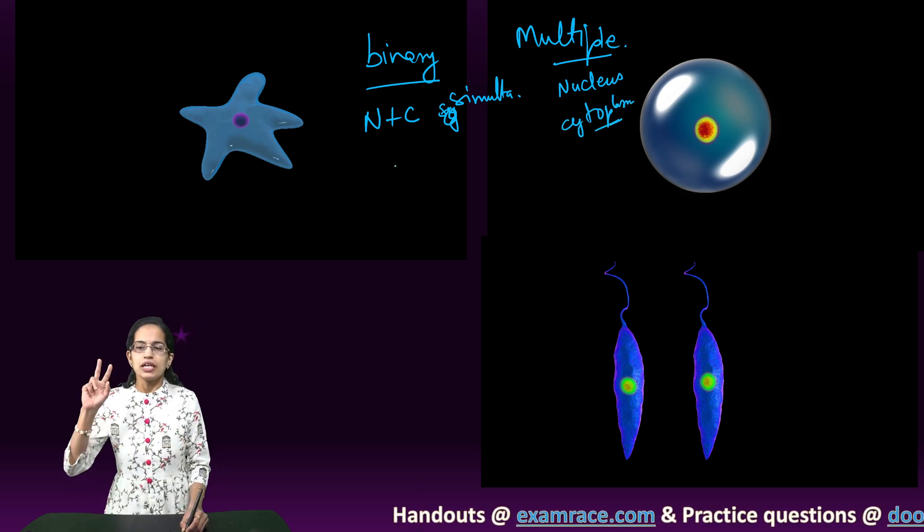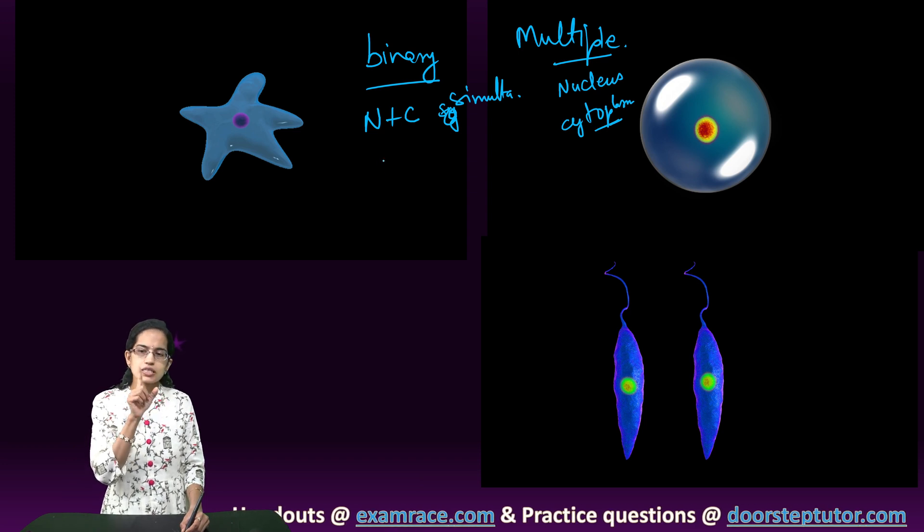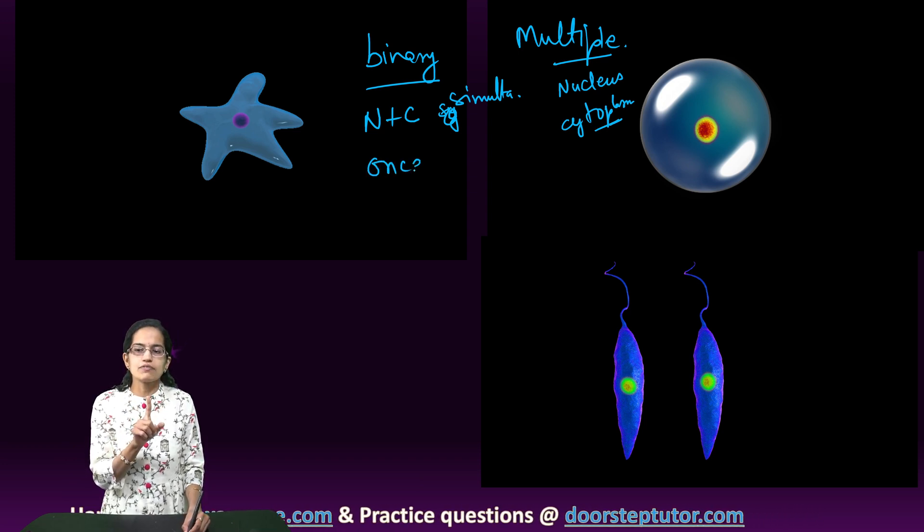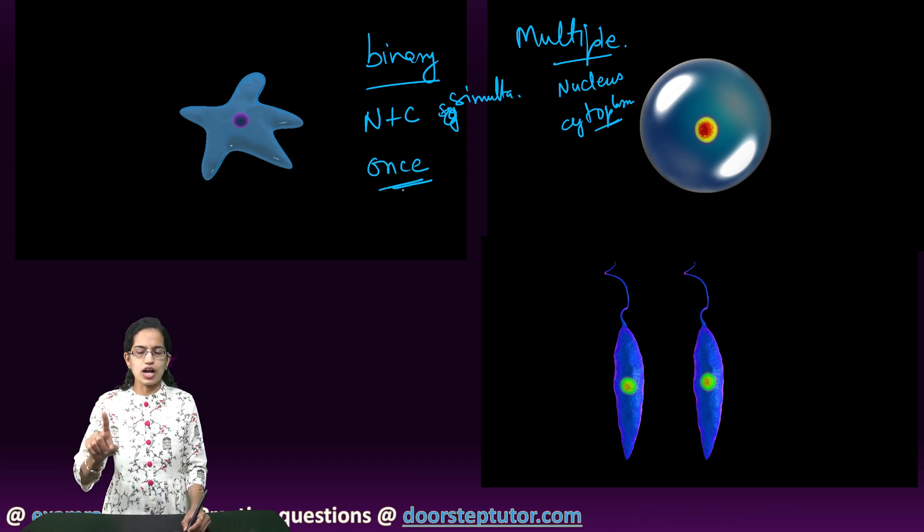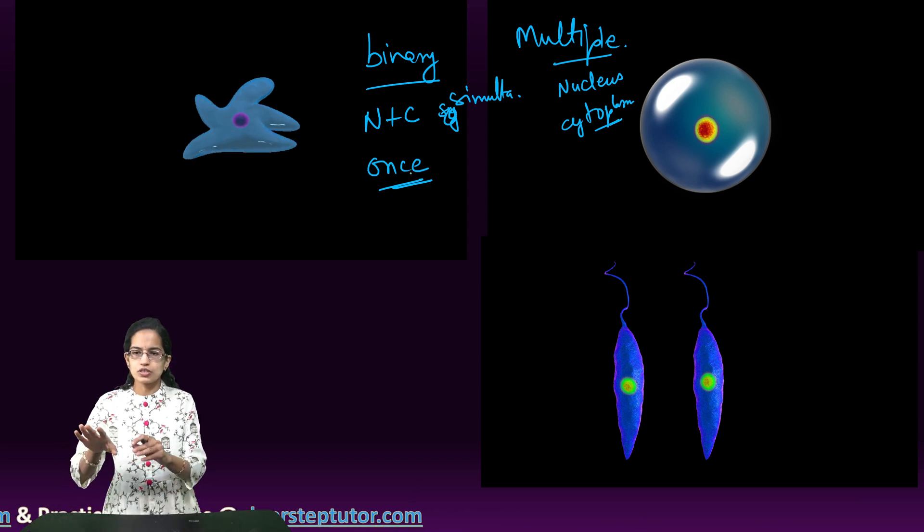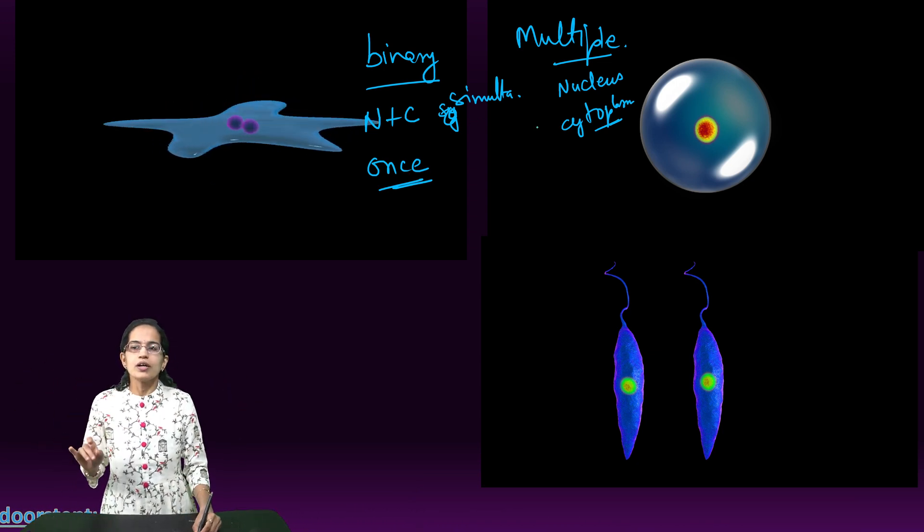Here the division is only once. The division process takes place only once. One parent produces two cells and that's it.